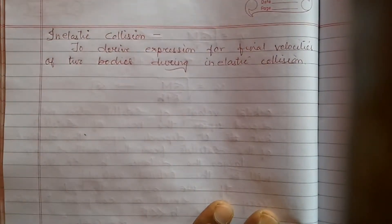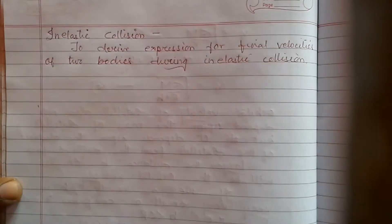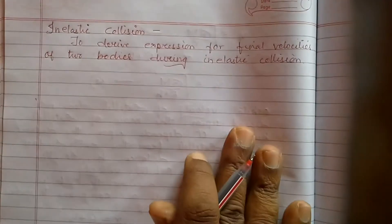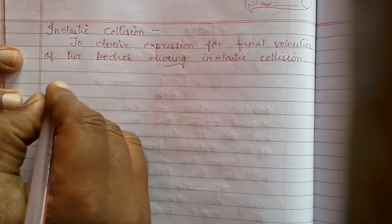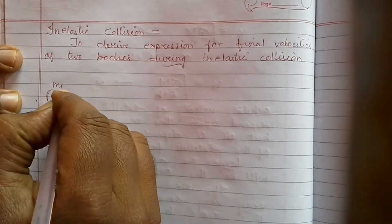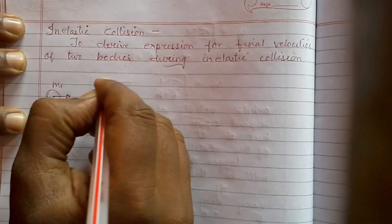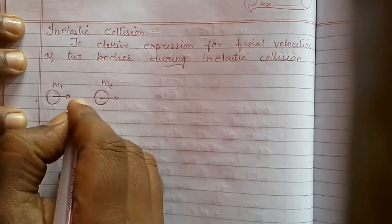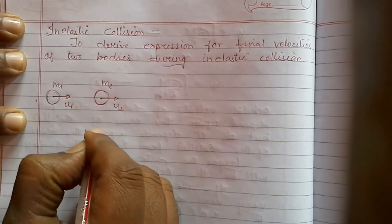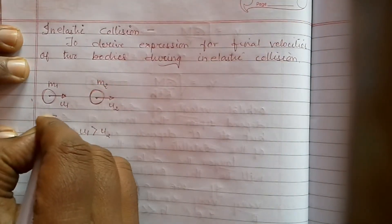Hello everyone, my name is Titus and today we are going to derive the expression for final velocities of two bodies during inelastic collision. To derive the expression, first let us draw the diagram. Let us consider two bodies of masses m1 and m2 moving with initial velocities u1 and u2, where u1 is greater than u2. This is before collision.